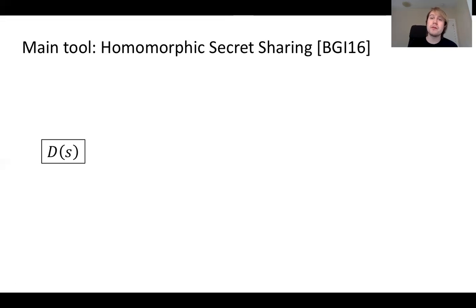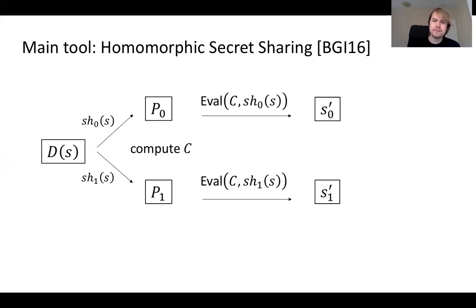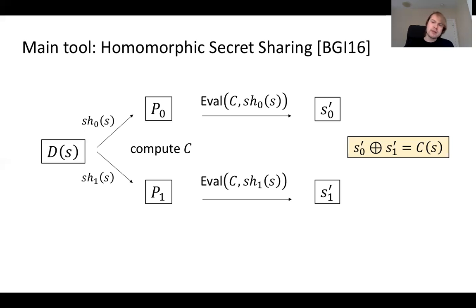For the next few minutes, we'll consider a dealer model where a trusted dealer starts the protocol by giving each party some parameters. For HSS specifically, a dealer has a secret S, secret shares that secret to two parties P0 and P1. These parties want to compute some circuit C over the secret; there's an evaluation algorithm each of them can apply to their share to produce output shares S0 prime and S1 prime. The homomorphism property says these output shares simply XOR to the value of C of S.